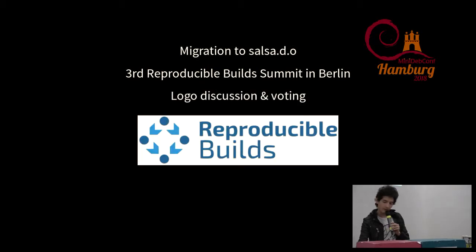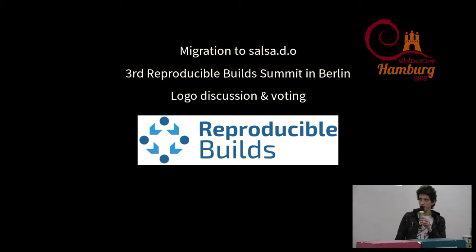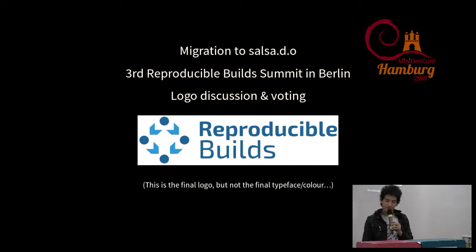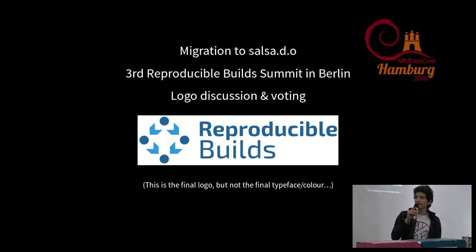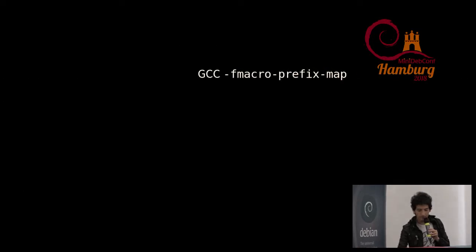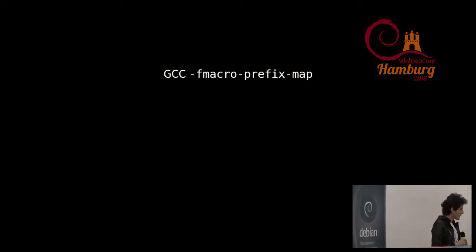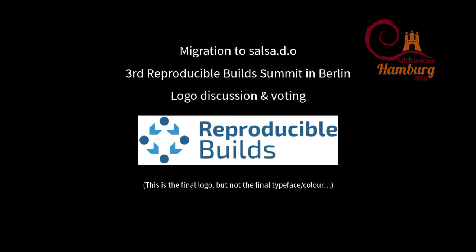What's new since DebCon 17 in Montreal: we have done the migration to Salsa, we had the third Reproducible Build Summit in Berlin, we discussed the logo and voting, and this is the new logo for our team — though not the final typeface and color. But we will soon have t-shirts, which we've wanted for more than a year.